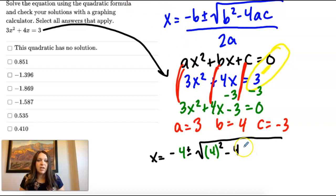Minus 4, times a, which is 3, times c, which is negative 3, all divided by 2 times a, which is 3.